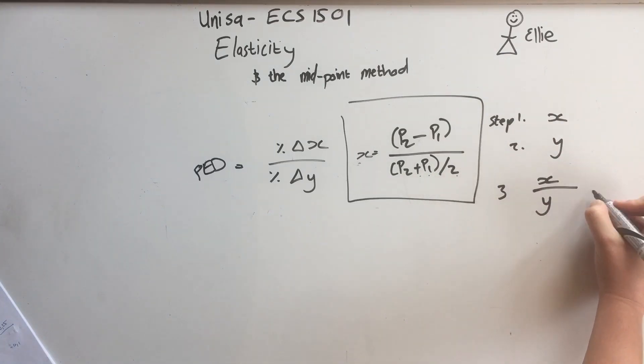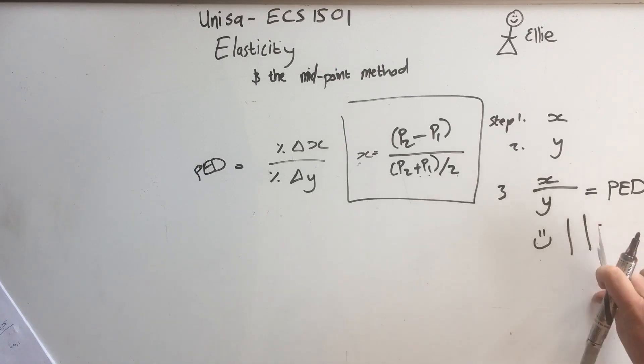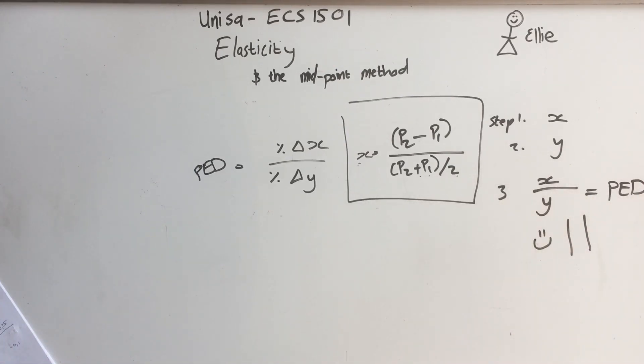And step 3 is you take the X answer and you divide it by the Y answer, and that will give you the price elasticity of demand. And then remember, it's absolute values, which means pluses and minuses can be deleted, it does not count.